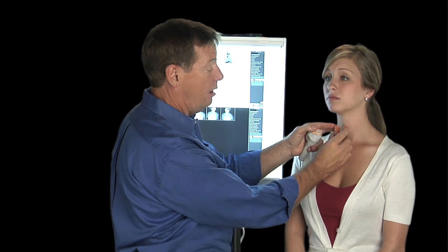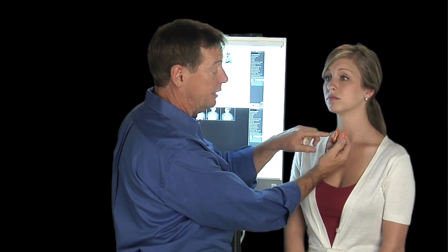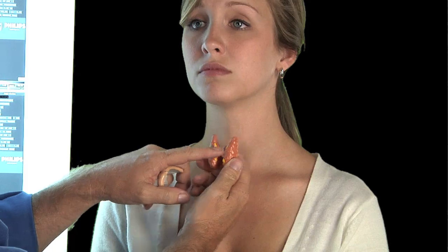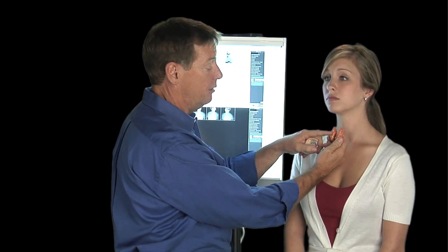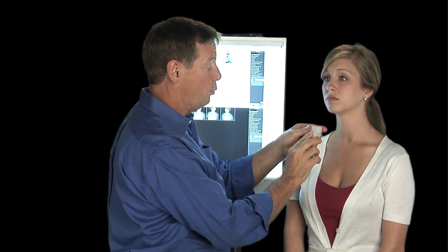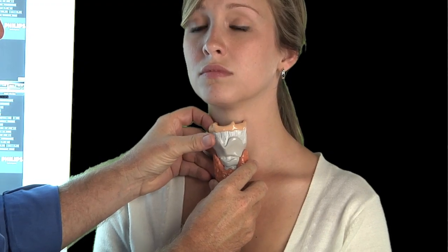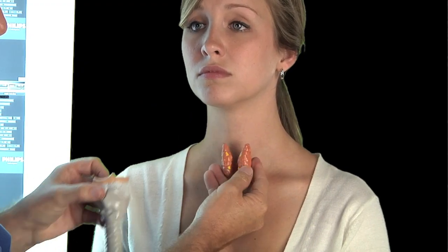The parathyroid glands are behind the thyroid, these little yellow spots. We have four of them. That's where they sit around or para the thyroid gland. So we all have a thyroid. We all have a trachea. The parathyroid glands, we all have four of them right there.